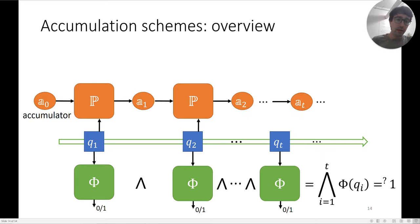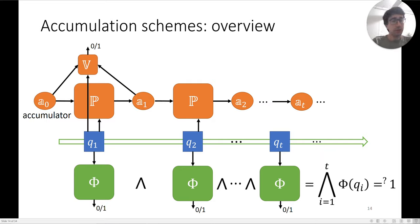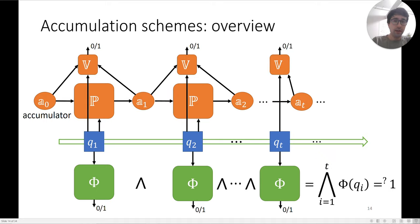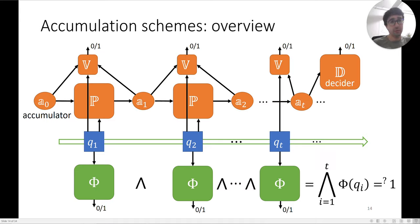The cryptographic object is an accumulator. The accumulation prover P takes in the old accumulator and the current query and outputs the next accumulator, done repeatedly. We also have a verification algorithm that checks the prover's work at each step: it takes in the old accumulator, the next accumulator, and the current query, and outputs one if the prover did its job correctly. Finally, we have a decider algorithm that runs just once at time t, taking in the final accumulator and checking whether it is valid.